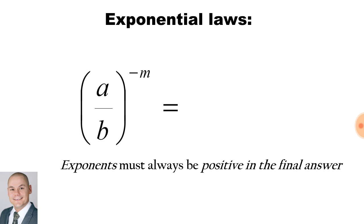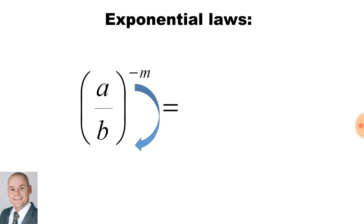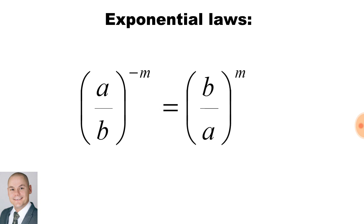Here we have a fraction inside the bracket, all to the exponent of minus m. Remember, exponents must always be positive in the final answer. The numerator a and the denominator b would have to be inverted or swapped around in order to make the exponent positive. Therefore we would have a fraction of b over a to the exponent of m.